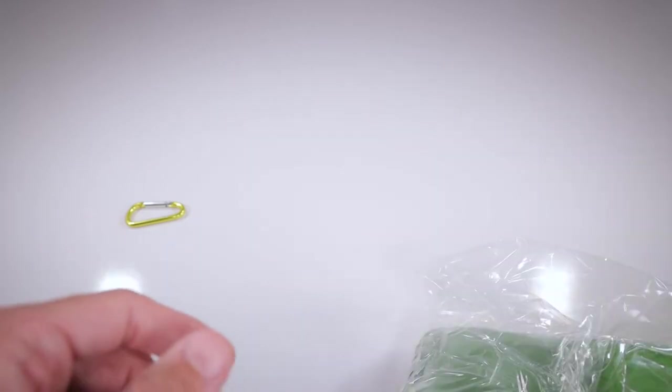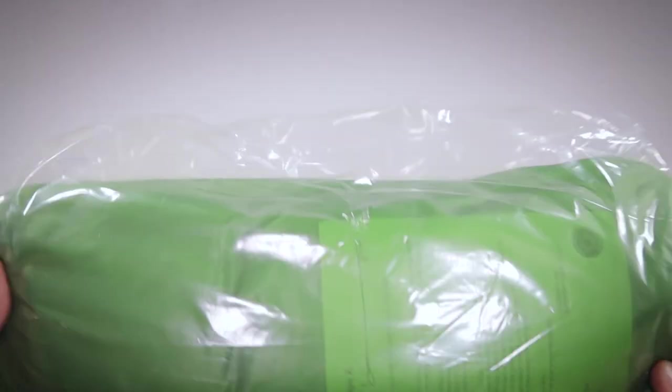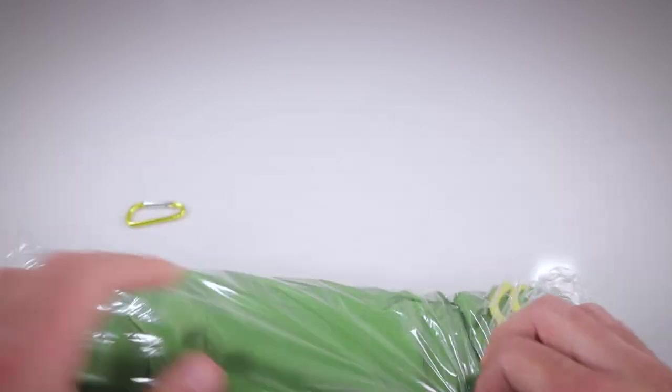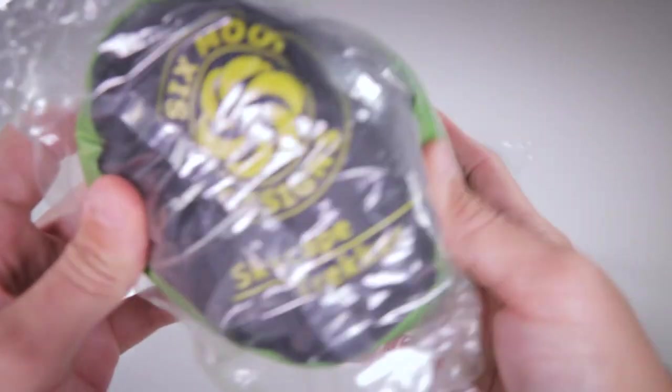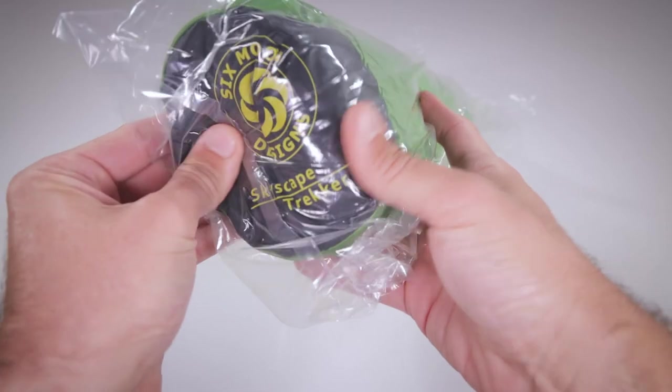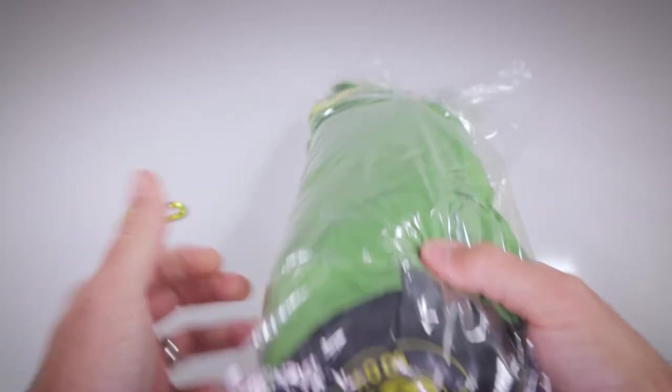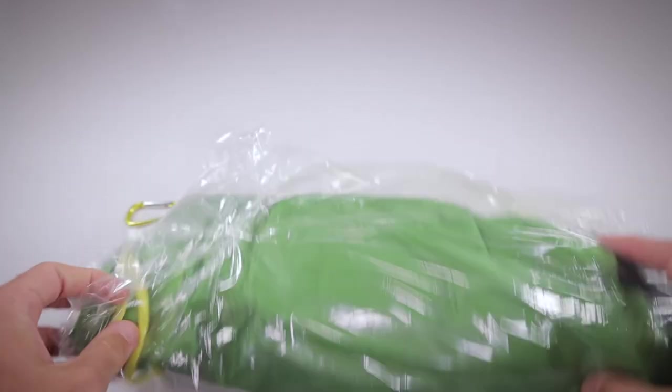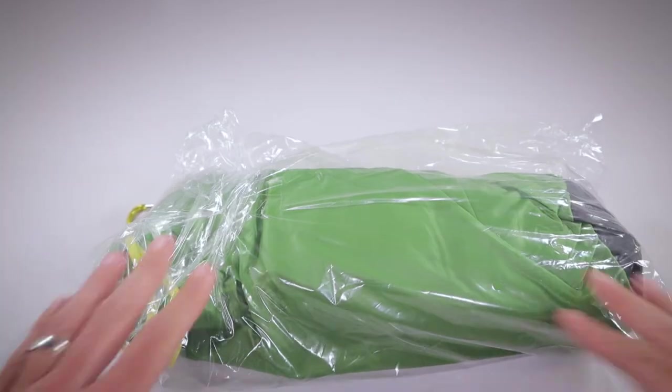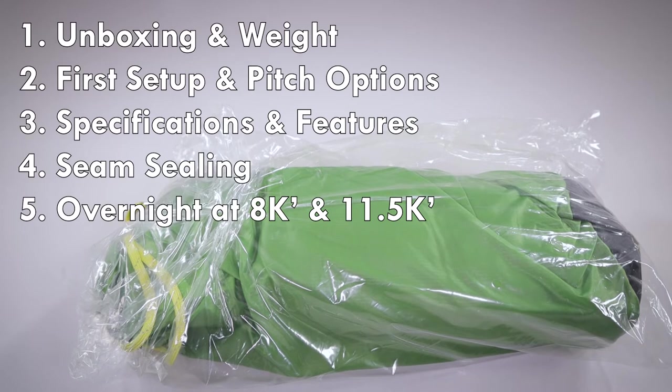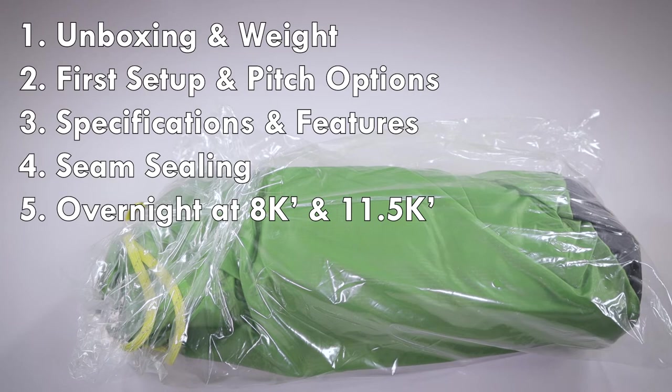We got our paperwork, who cares, and this, this is what I wanted to show you guys. What I got here is, look at that, Skyscape Trekker 2019 model. So I went ahead and I scooped this up. I'm actually going to do a five part series, I believe, either four or five parts. I'll go ahead and list all the different videos that I'm going to be doing on this Skyscape Trekker model tent from Six Moon Designs.